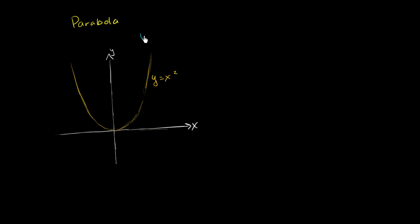Let's think about what the curve of y minus k is equal to x squared would look like. Right over here we see when x is equal to 0, x squared is equal to 0. For this new curve, x squared isn't equal to y — it's equal to y minus k. So when x equals 0 and we square it, 0 squared gets us to y minus k, which is k less than y.